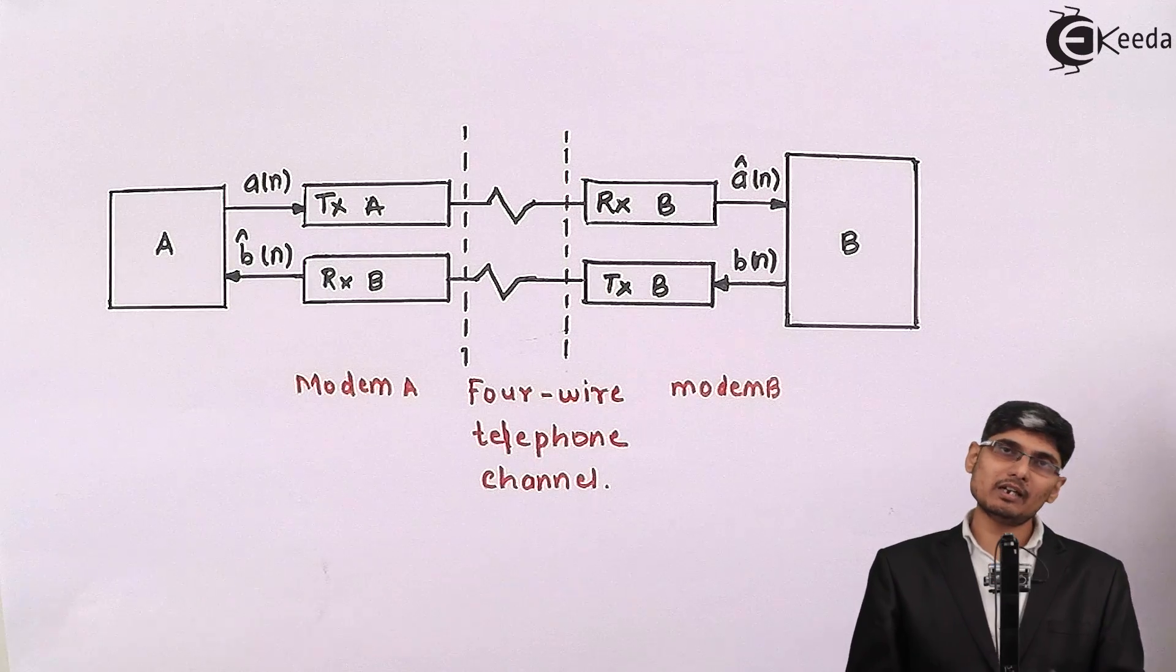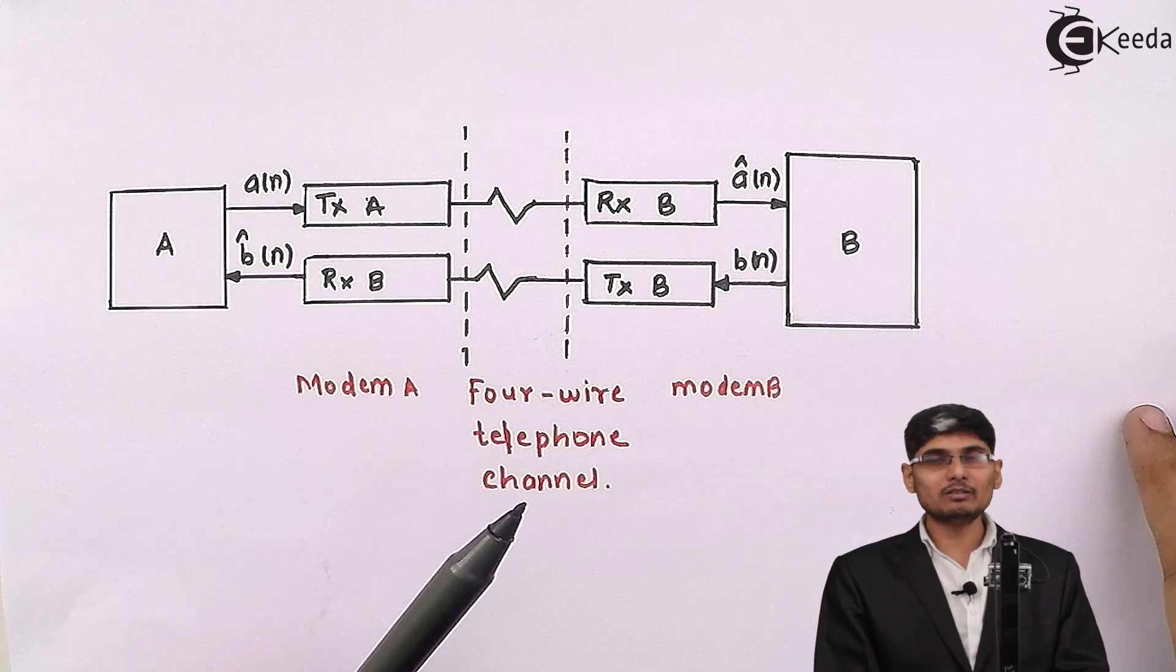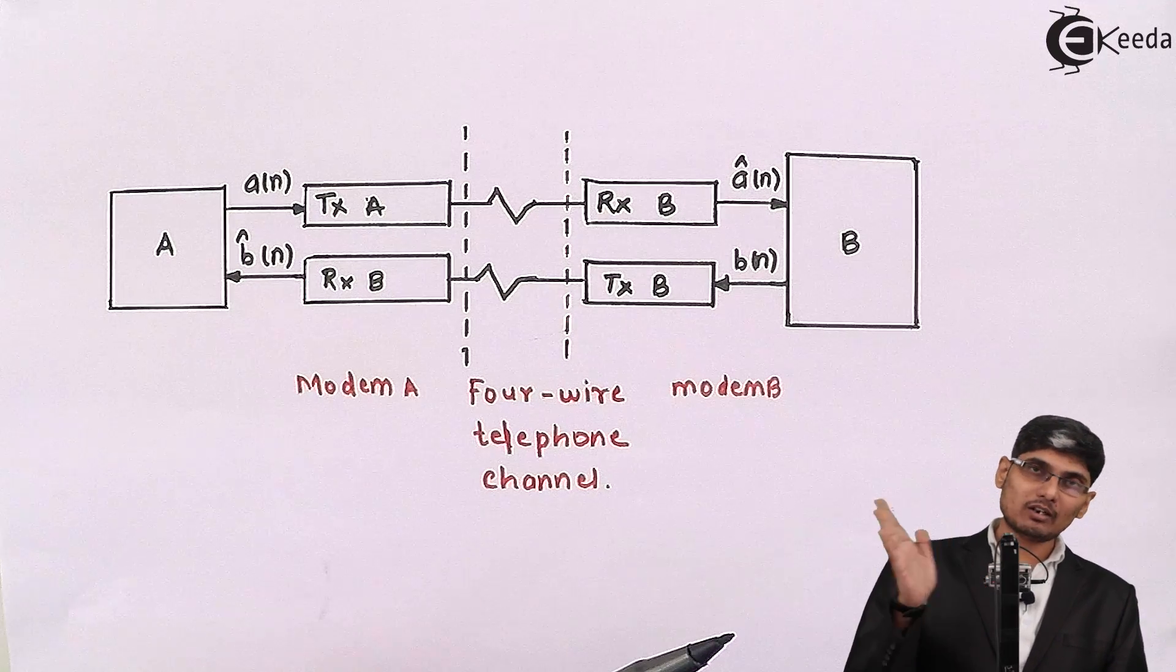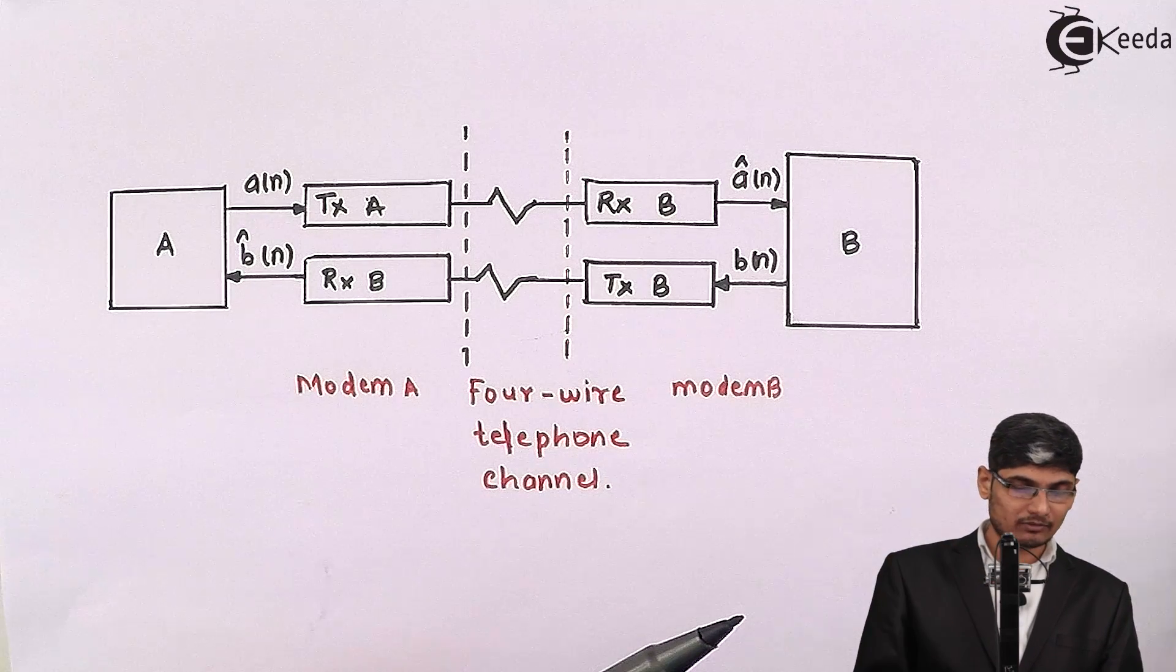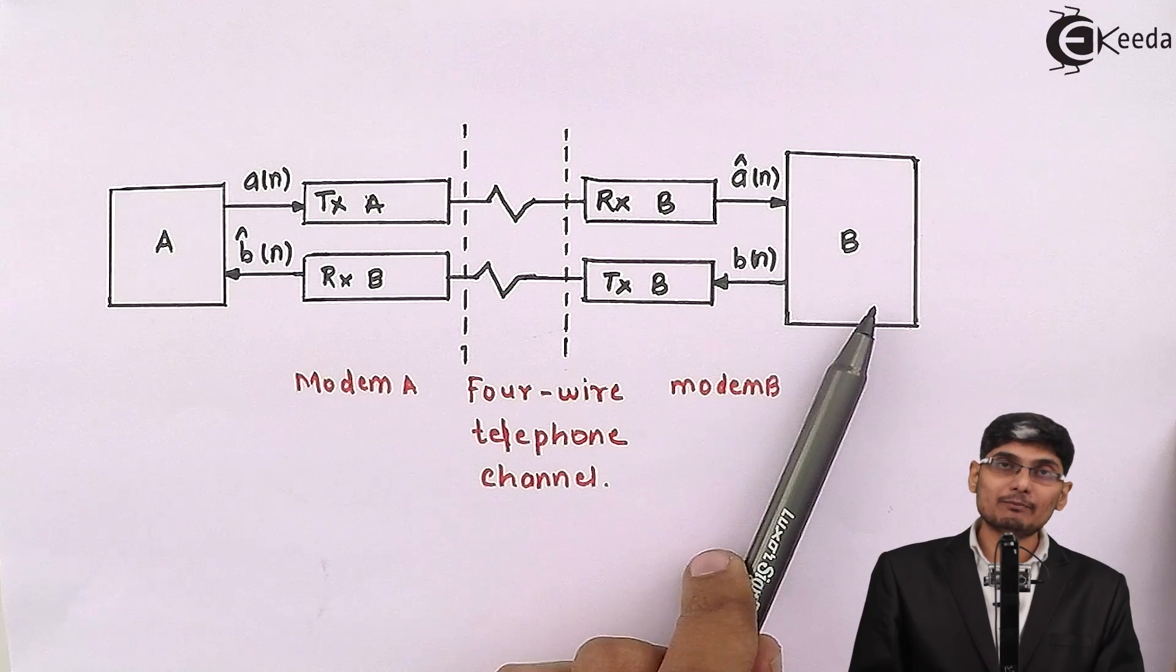Because in voice communication there will be no one-side data flow, there is always two-side data. So let's say I have entity A and I have entity B.